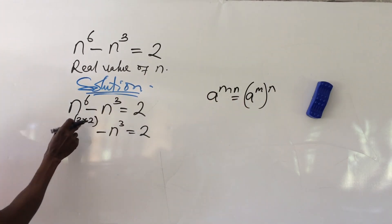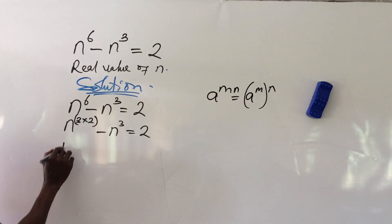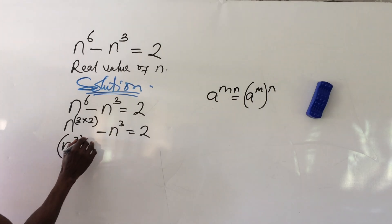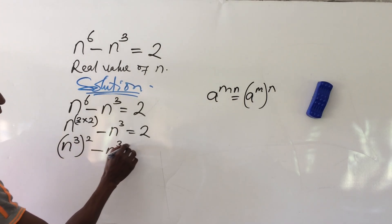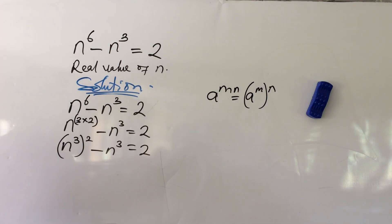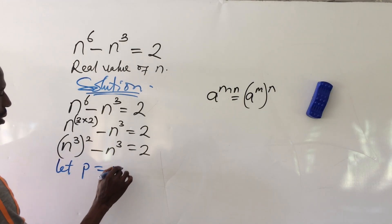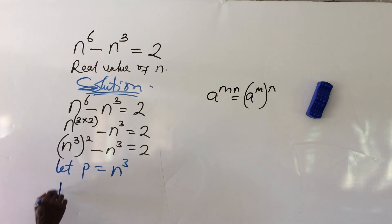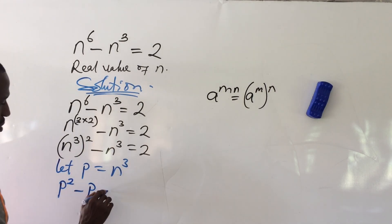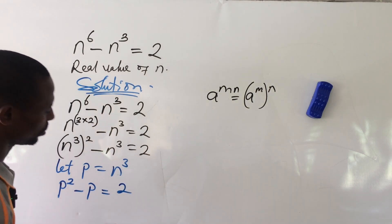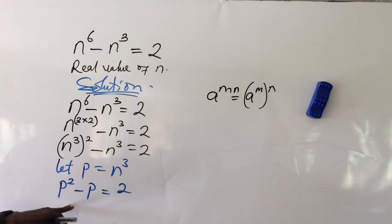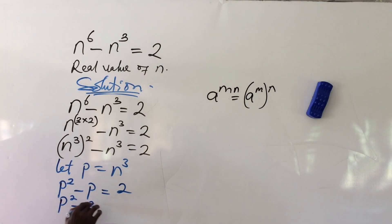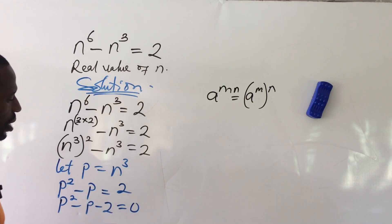So we have n to the power of 3, raised to the power of 2, minus n to the power of 3 equal to 2. We let p equal to n to the power of 3. This gives us p squared minus p equal to 2. Moving 2 to the left-hand side, we get p squared minus p minus 2 equal to 0.